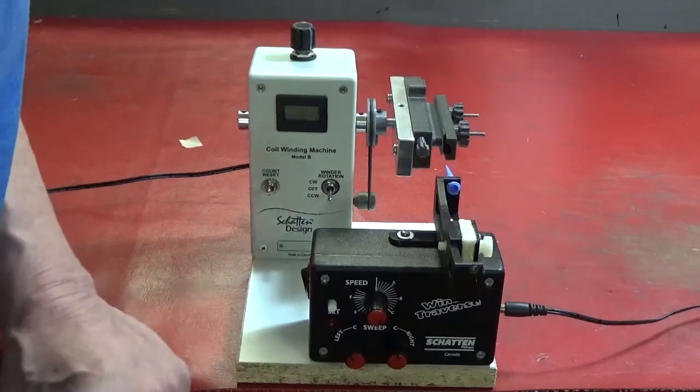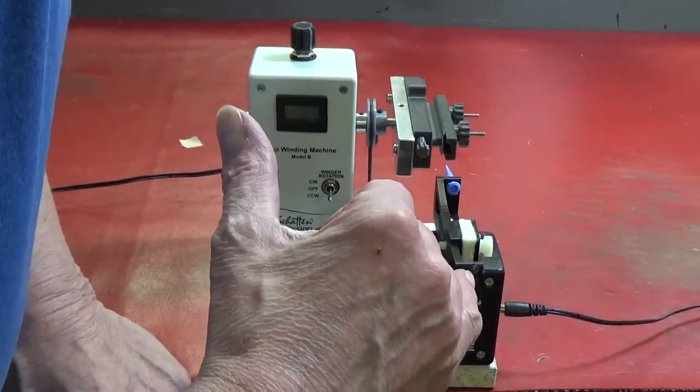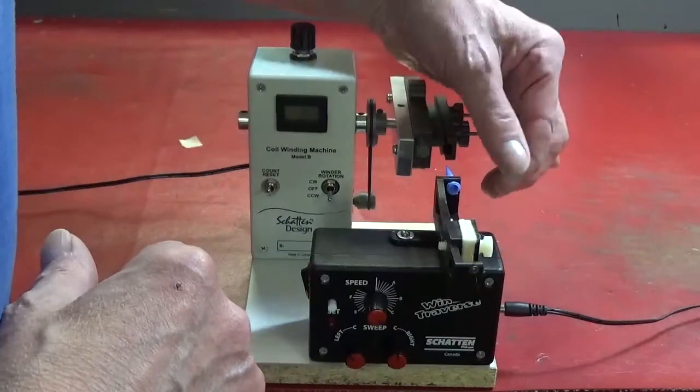Place the spool of coil wire on the floor, run the wire up through the grommet, through the felt tensioning pads and out through the nozzle.